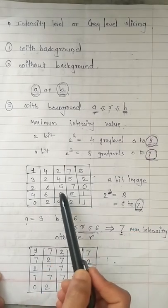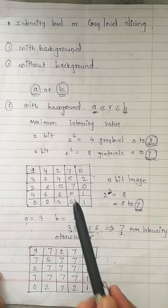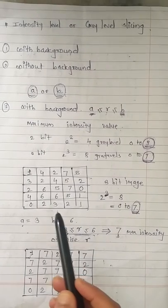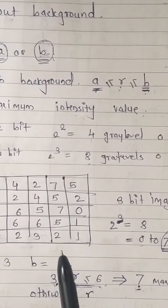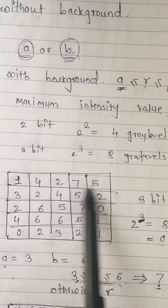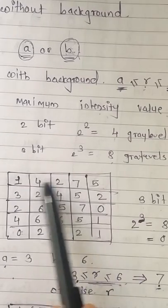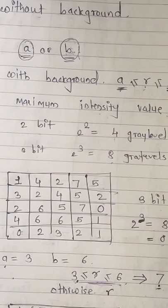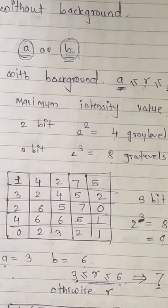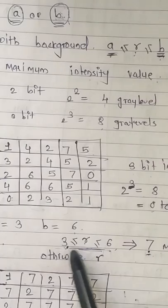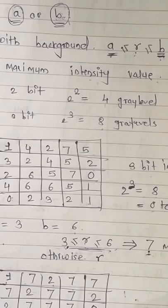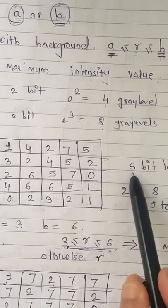Now just consider the example. Here you are going to check whether the intensity value belongs to the specific range. If it belongs to the specific range then you are going to replace it with the maximum intensity value. The input intensities are 1, 4, 2, 7, 5 — this is the input intensity for a 3-bit image. Here you have given the value of A and B as 3 and 6. Therefore the formula for intensity level slicing with background is: 3 ≤ input intensity ≤ 6, which will be replaced with maximum intensity value, since this is a 3-bit image.